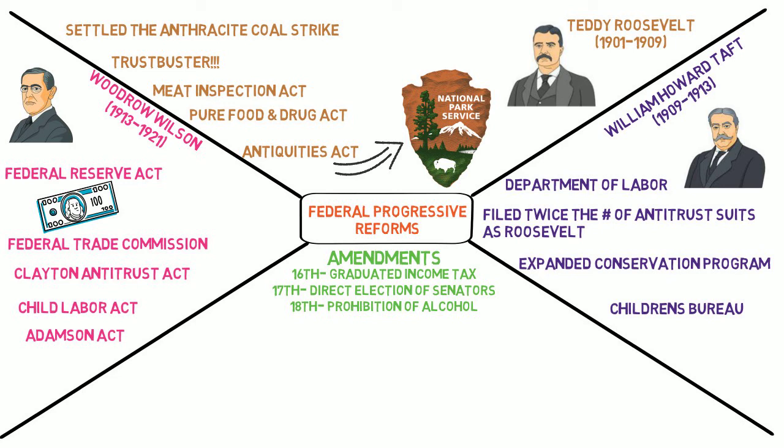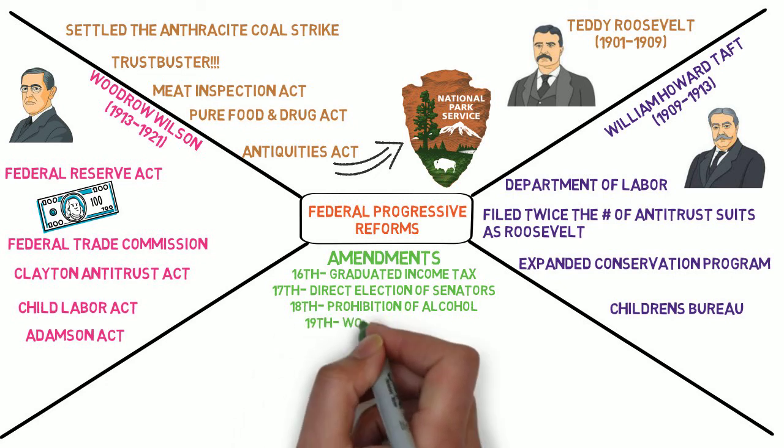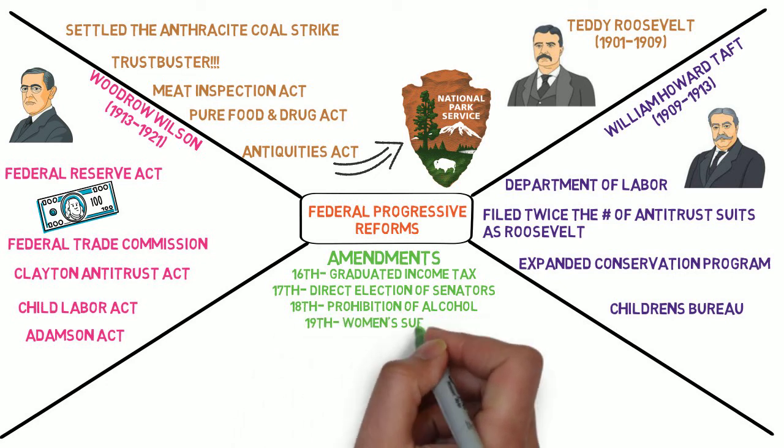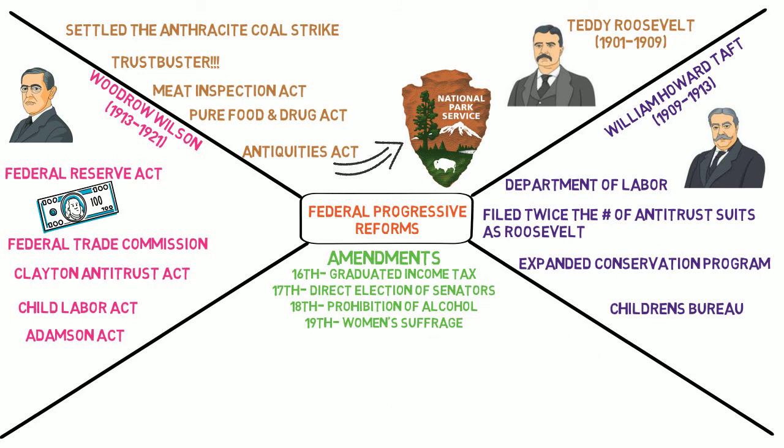And in 1920, 67 years after the Seneca Falls Convention and the publication of the Declaration of Sentiments, thanks to the tireless efforts of reformers such as Elizabeth Cady Stanton, Susan B. Anthony, and Lucretia Mott, women across the country were guaranteed the right to vote with the ratification of the 19th Amendment.